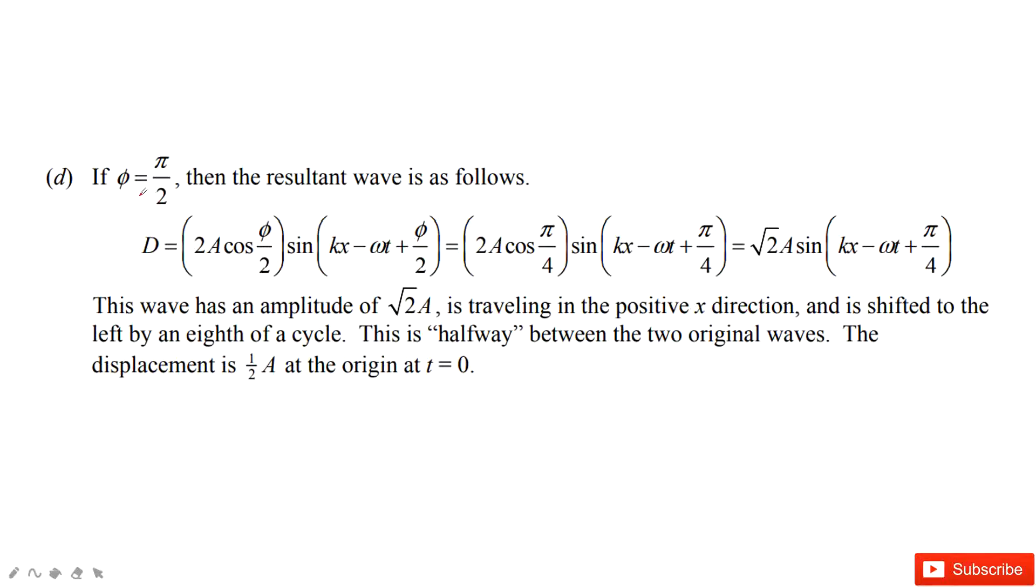The next one, if φ is π over 2, can you find the resultant wave? Sure. So you just input φ inside. See, it looks like this one, and it can be simplified as √2 A sin(kx - ωt + π/4). This one, you can see, the amplitude changes and the phase shift changes.